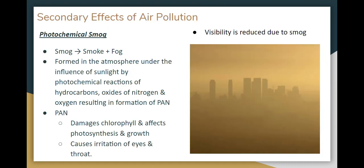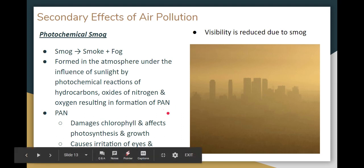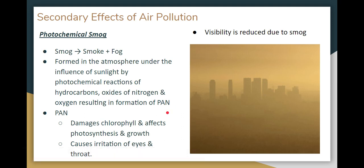The secondary effects of air pollution include: first, photochemical smog. Smog is a combination of smoke and fog. It forms in the atmosphere when sunlight influences a reaction between hydrocarbons and nitrogen oxide. This reaction forms peroxyacyl nitrate — called PAN. PAN causes chlorophyll damage, which leads to photosynthesis damage in plants, affecting plant growth. In humans, it causes throat irritation and reduces visibility.